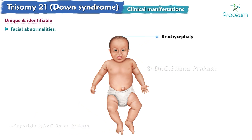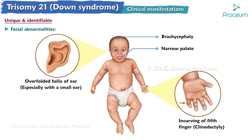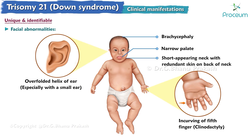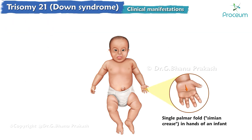Additional features include nystagmus, brachycephaly, incurving of the fifth finger, narrow palate, over-folded helix of the ear — especially with a small ear — short-appearing neck with redundant skin on the back of the neck, and broad, short hands and feet. A single palmar fold, also called a simian crease, in the hands of an infant is indicative of Down syndrome.